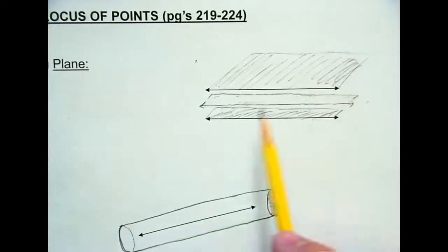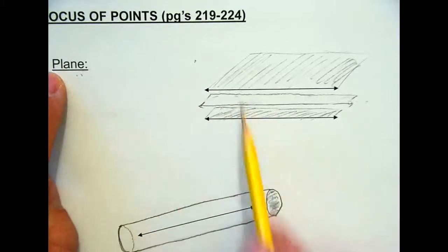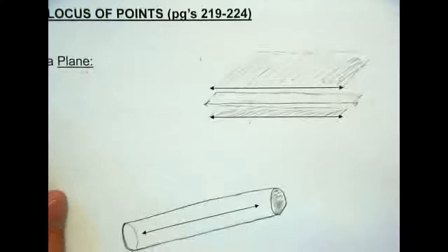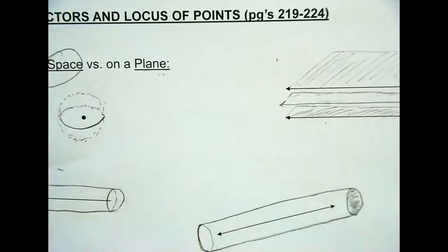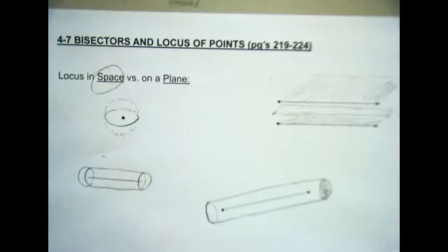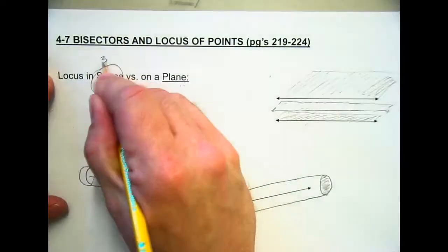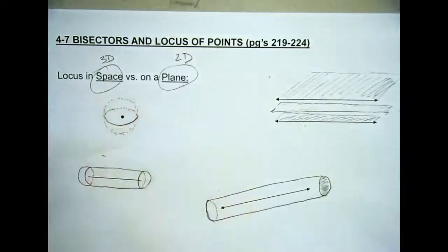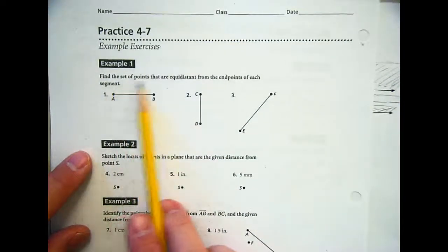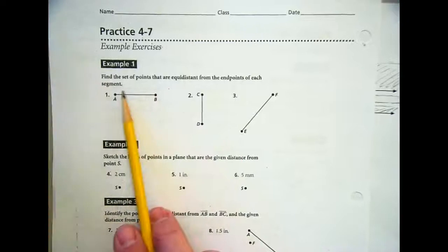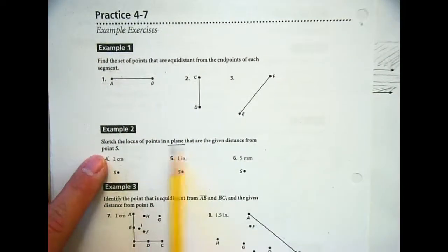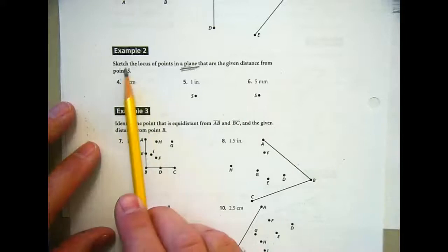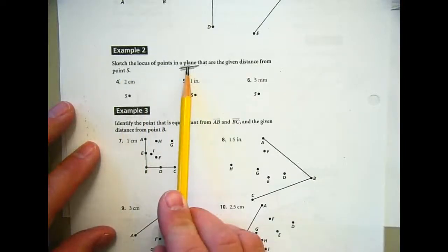Are they originally lines or planes? On a two-dimensional surface, they were lines. Now we're going 3D, which makes them planes — we're adding an extra dimension. The key words here: when you're reading your directions, the word 'space' means 3D — that's what we've done on this page — versus 'plane,' meaning 2D, which was all the other pages. So if it says 'sketch the locus of points in space,' then you go three-dimensional.